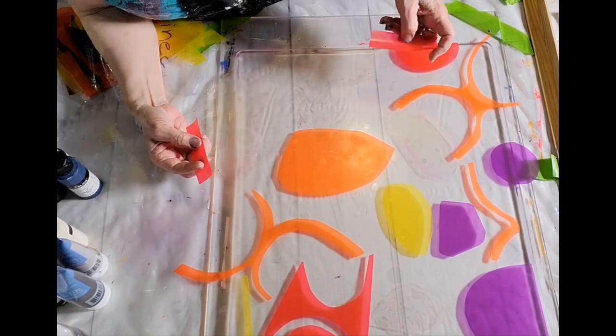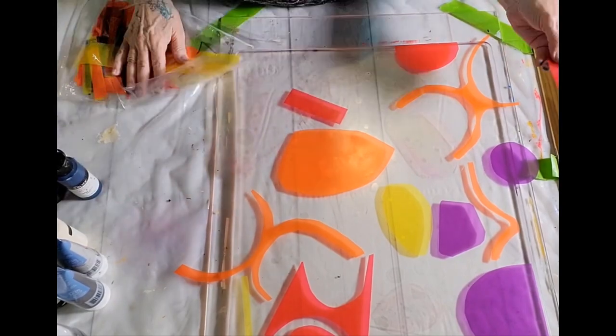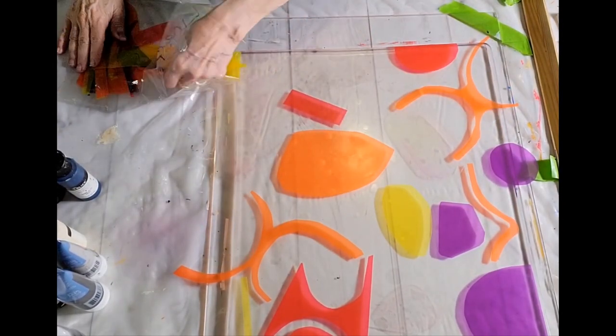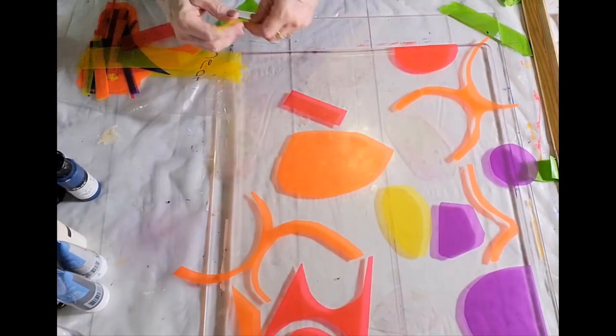Here I'm placing some rectangular pieces, some linear pieces to contrast with the orb-like shapes or the round shapes that I have there already.